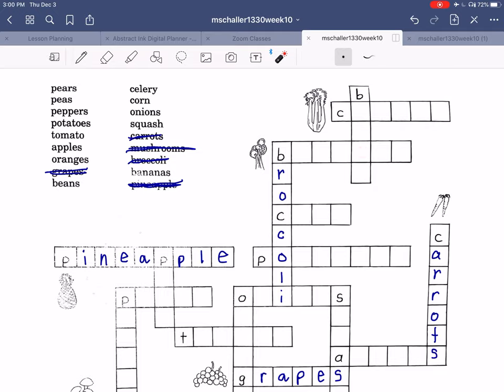And then we have bananas. B-A-N, three, four, five, six, seven letters. One, two, three, four, five, six, seven. Yeah, bananas. B-A-N-A-N-A-S. You can cross off bananas.